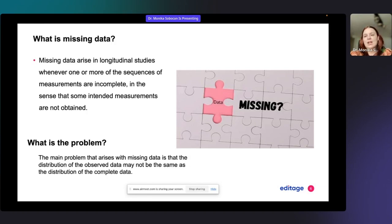What is missing data from a definitions point of view? Missing data arises in longitudinal studies whenever one or more of the sequences of measurements are incomplete, in the sense that some intended measurements are not obtained. It can be in longitudinal settings or in observational settings.